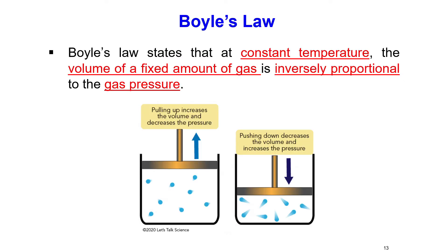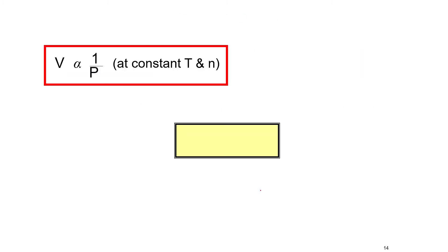Boyle's Law states that at constant temperature, the volume of a fixed amount of gas is inversely proportional to its pressure. So volume is directly proportional to 1/P. Pulling up increases the volume and decreases the pressure; pushing down decreases the volume and increases the pressure. Mathematically, at constant temperature and number of moles, P × V = k, where k is the proportionality constant.